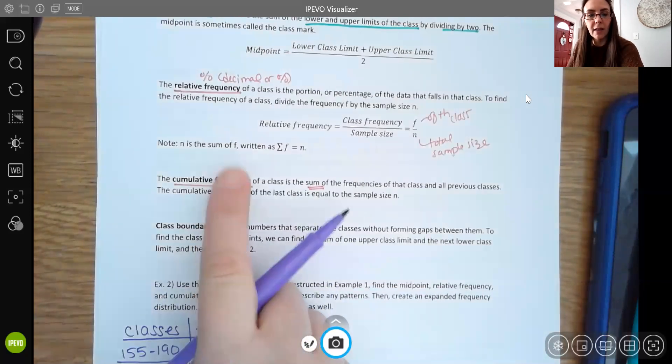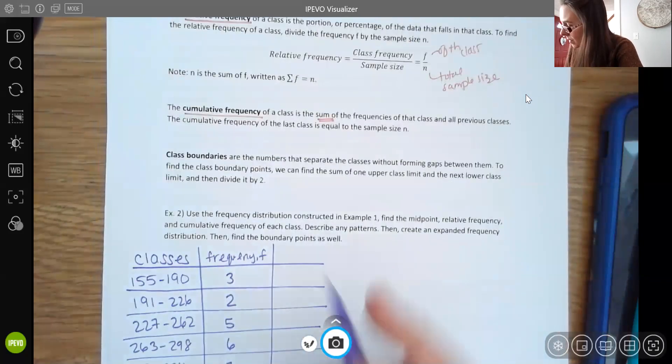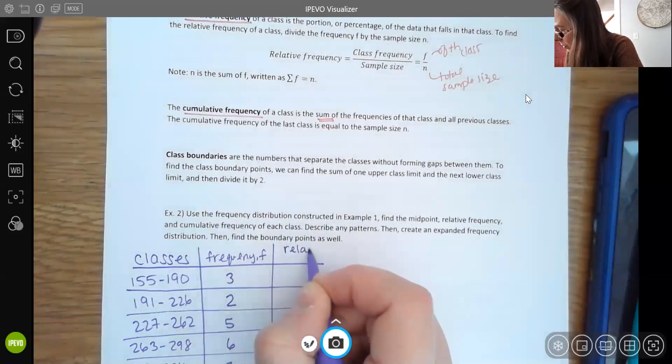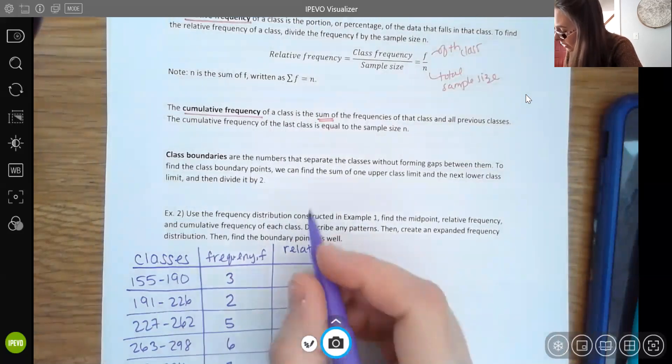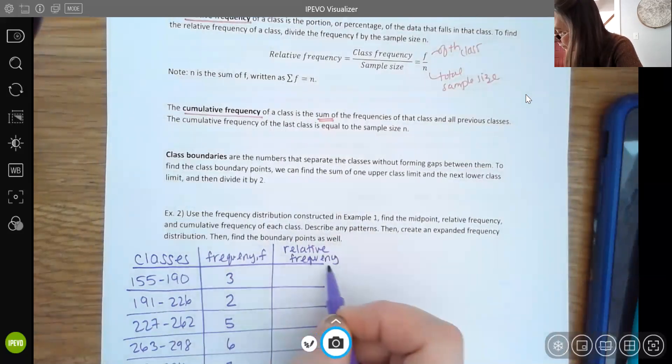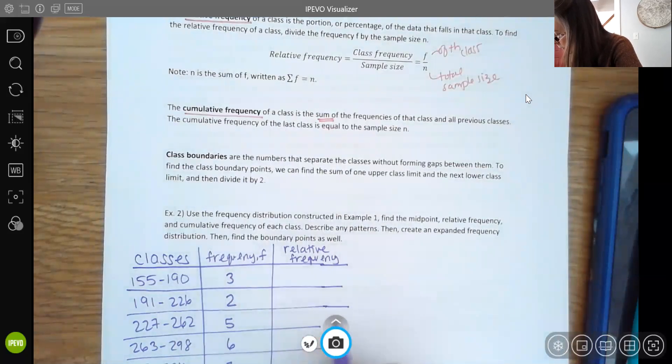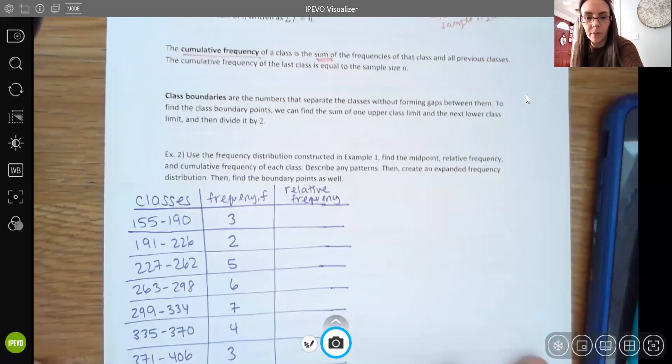And I'm going to start with this relative frequency. So I'm going to just make another column here. Sometimes people will do these tables as separate, like do this as one table and then do a separate table for relative frequency. So I'm just going to combine it. This could be in decimal form or sometimes you'll see percent form. Most of the time it's decimal form.